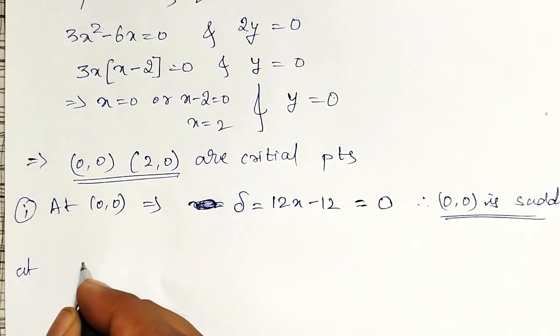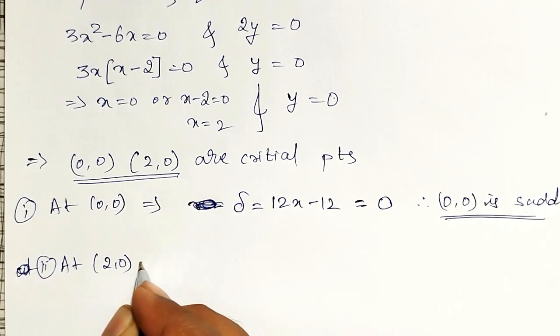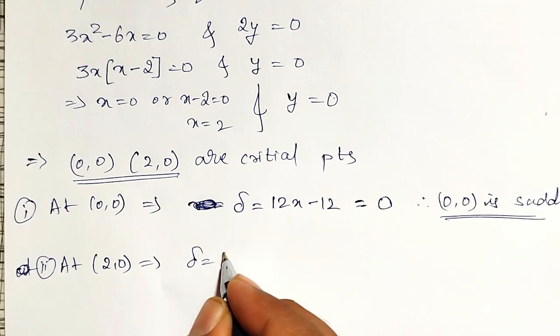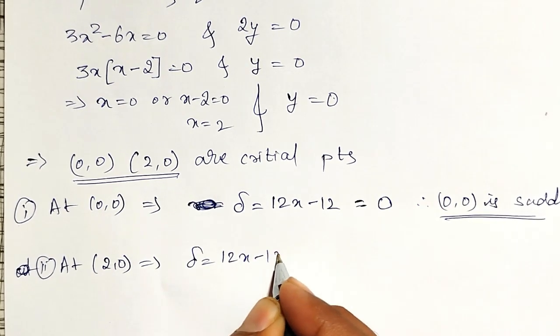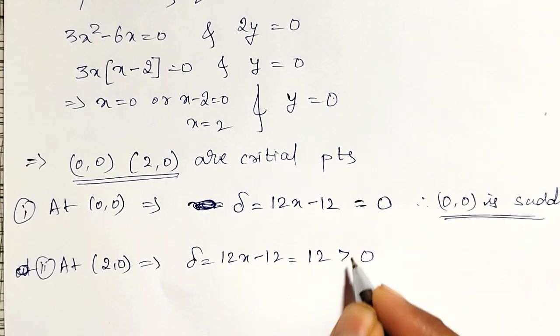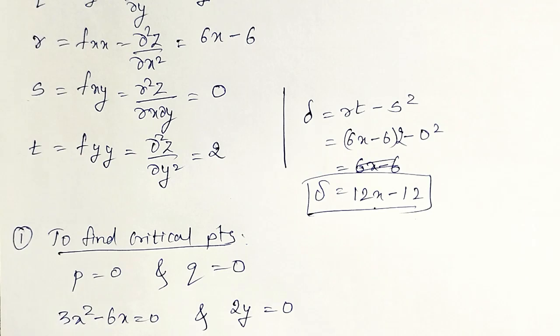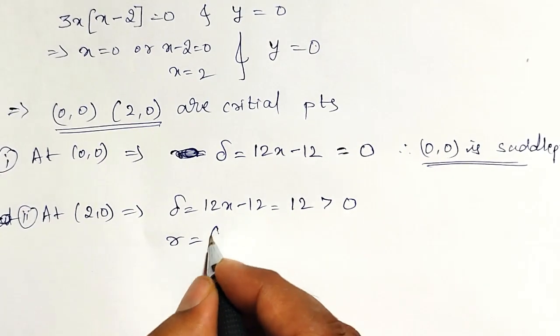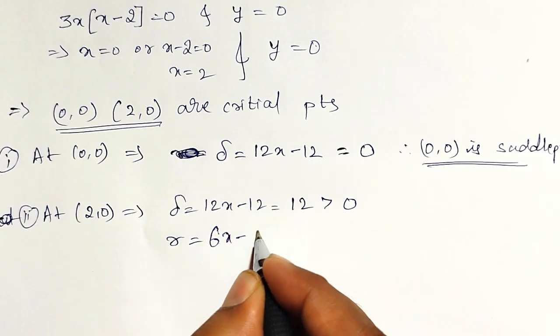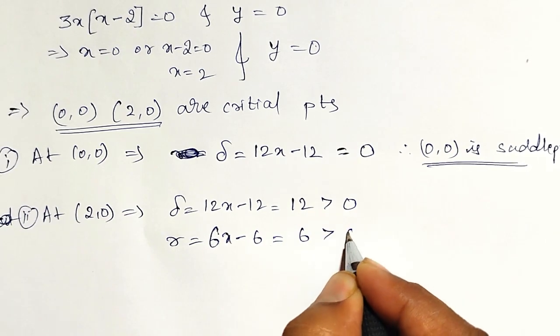Next. At second point. At 2 comma 0. What about this delta equal to? 12x minus 12. That is x equal to 2. 24 minus 12 equal to 12. Which is greater than 0. And let me check for r. What is my r value? r equal to 6x minus 6. Substitute in that.